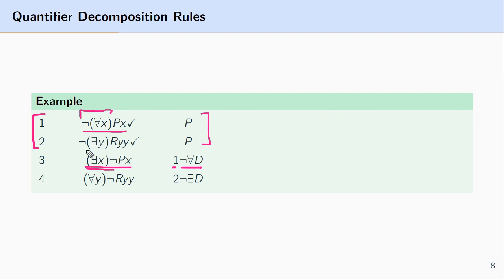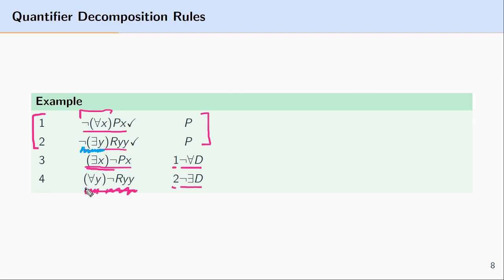At line two, we have a negated existentially quantified formula, so we apply the negated existential decomposition rule to line two. This gives us ∀y¬Ryy — the universally quantified ¬Ryy. We're replacing the negation and the existential quantifier with the universal quantifier that now ranges over ¬Ryy.